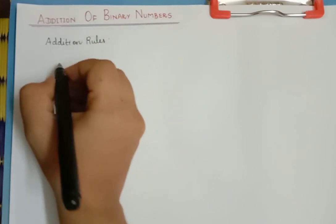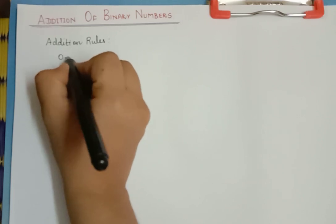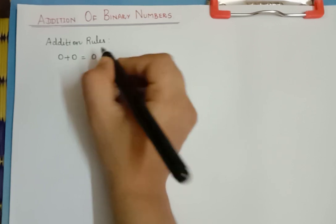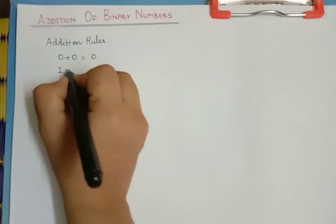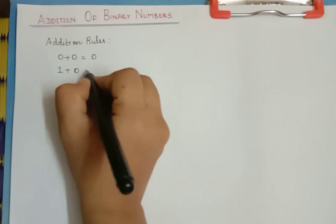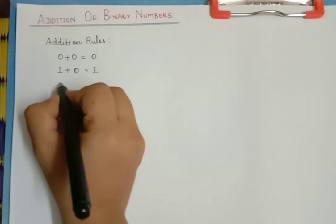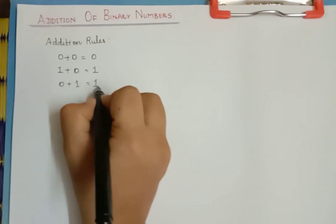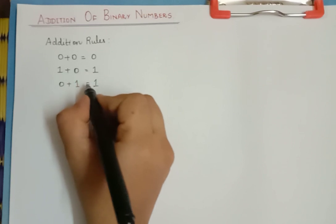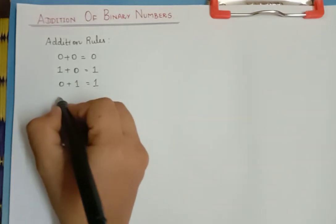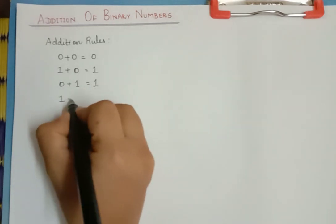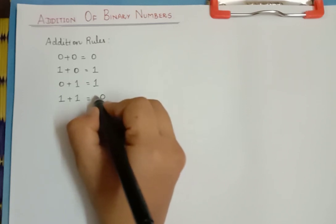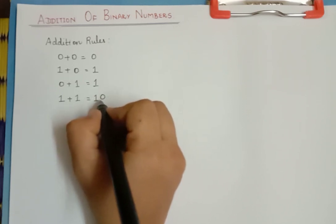The first rule is: if you add 0 and 0, the answer will be 0. And if you add 1 with 0, the answer is 1. And if you add 0 with 1, again the answer is 1. It is like simple addition only. But the difference comes when you add 1 and 1 — the answer is 0 with a carry over of 1, or you can say 10.